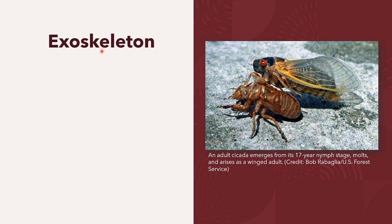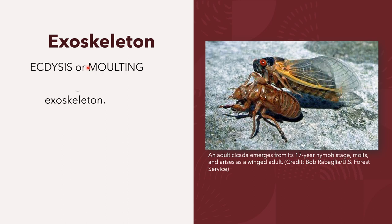As arthropods grow, the exoskeleton will become too small for them, so they periodically cast off the exoskeleton, and a new exoskeleton is formed. Casting off the exoskeleton is called ecdysis or molting. The diagram shows an adult cicada emerging from its 17-year nymph stage, molts, and arises as a winged adult.